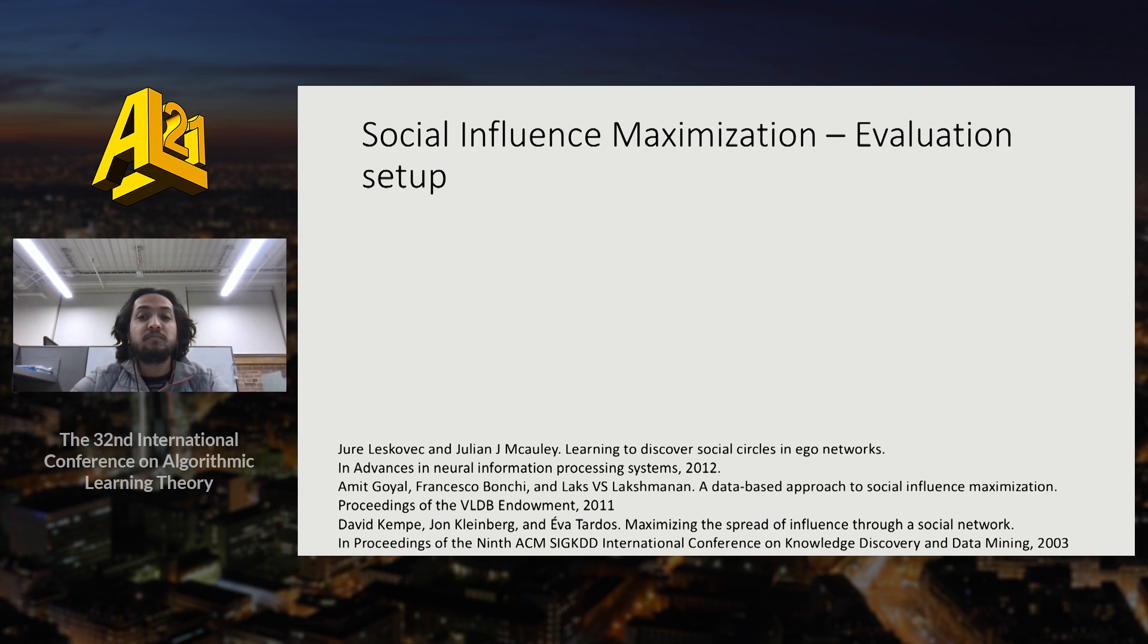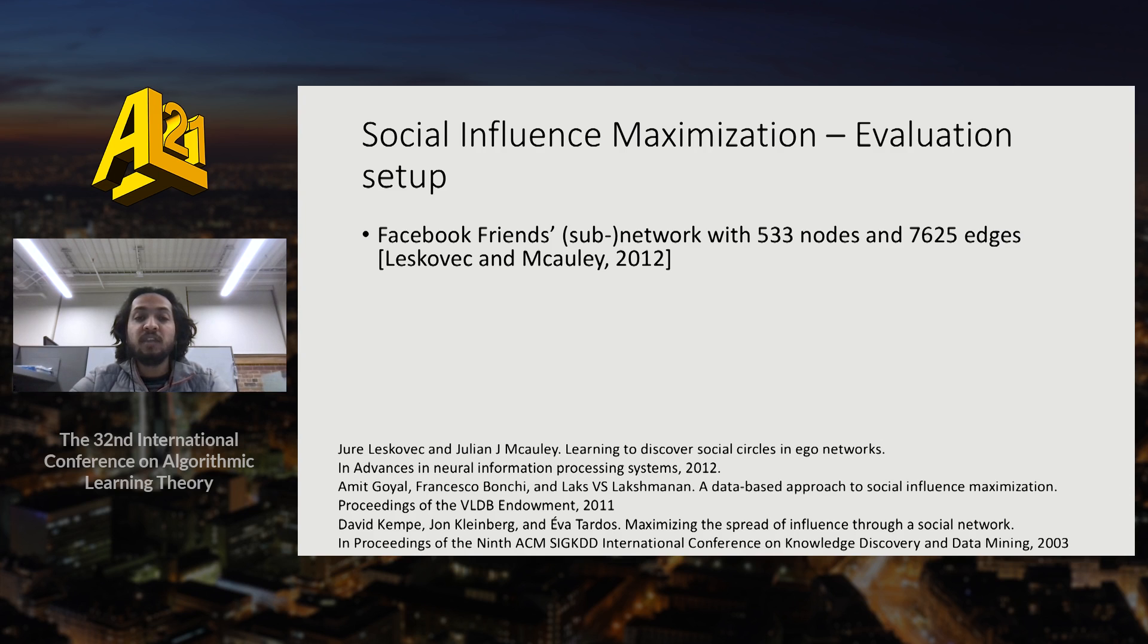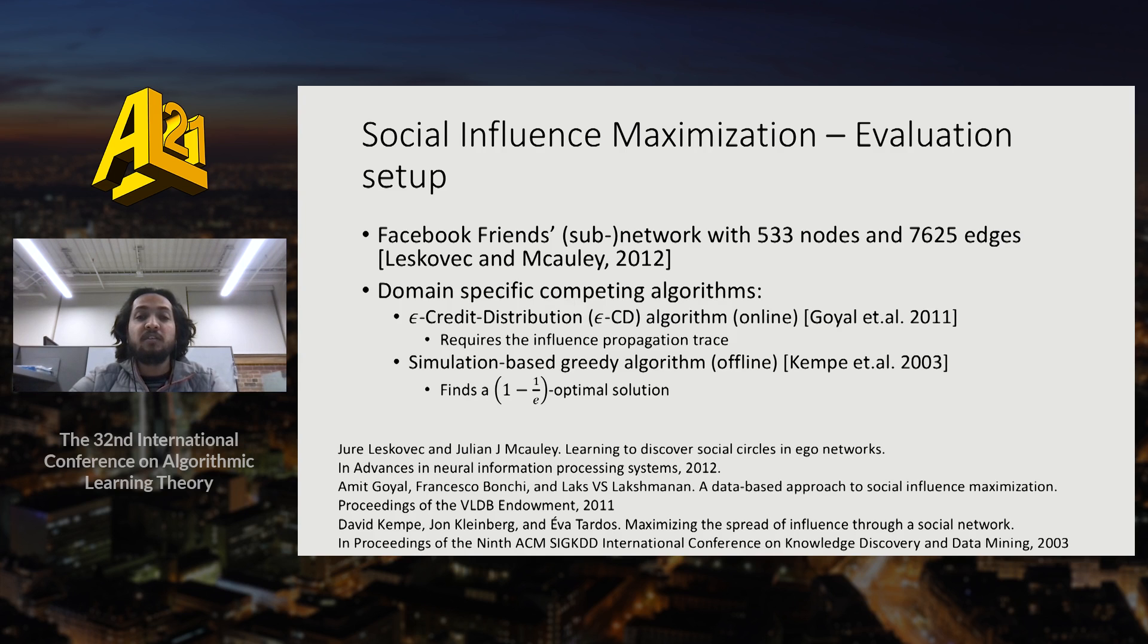We test the algorithm against a subnetwork of Facebook with 533 nodes and 7,625 edges and compare with domain specific algorithms. The first algorithm is epsilon-greedy distribution which performs random sampling for the first epsilon-t times, then generates a propagation trace, and for the remaining time optimizes using the obtained influence propagation trace. Note that this algorithm requires much more knowledge than our algorithm. Another algorithm we compare with is a simulation-based greedy algorithm. This is an offline algorithm and it finds a 1 minus 1/e optimal solution.